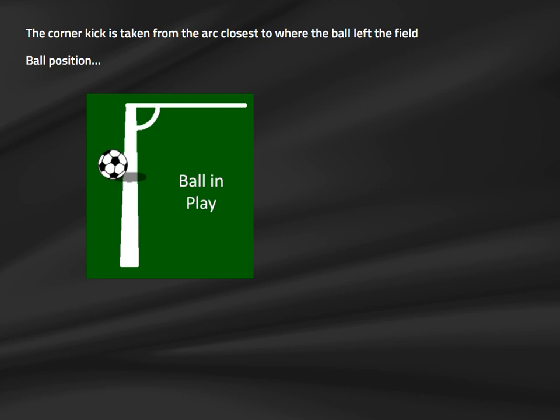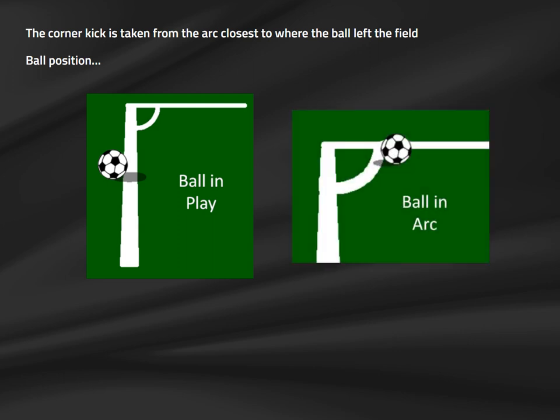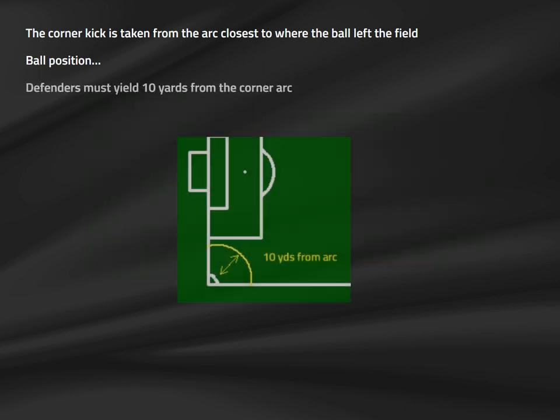Ball positioning on a corner kick follows the general principle: if any part of the ball's diameter sits over the corner arc, it is considered properly positioned. The only positioning requirement is that the defending team must yield 10 yards from the corner arc line — Law 17 explicitly states this distance is measured from the arc, not the ball. Aside from this, there are no restrictions for any players at the taking of a corner kick. As with throw-ins and goal kicks, no whistle is required unless the referee holds up play for substitution, misconduct, or injury.